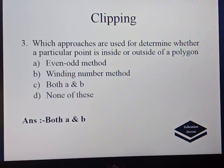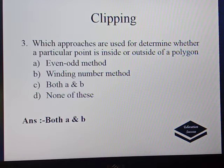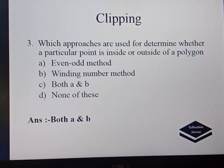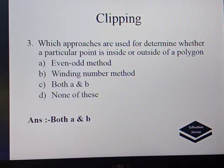Next question: which approaches are used to determine whether a particular point is inside or outside of a polygon? The options are even-odd test, windowing, winding number method, both A and B, or none of those. The correct answer is both A and B because the even-odd and winding number methods are the two approaches used to decide whether a particular point is inside or outside a polygon.